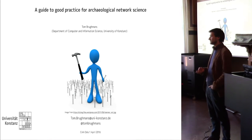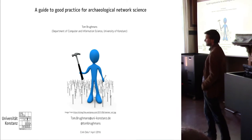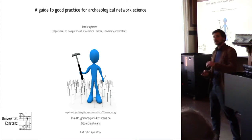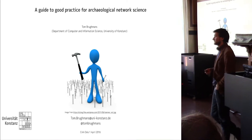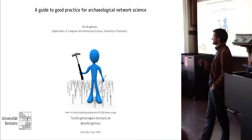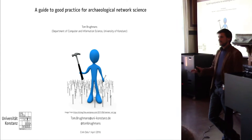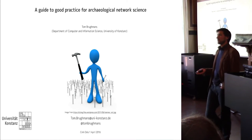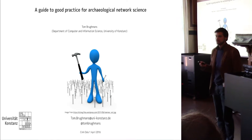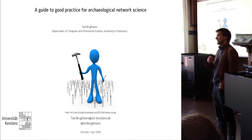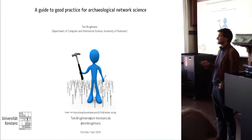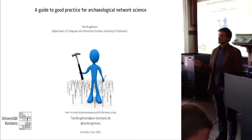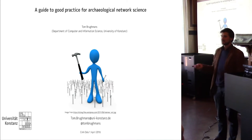We see nails everywhere when holding a hammer, so we have to avoid that. This is a common thing for new methods being adopted in an applied discipline like archaeology — it's nothing special to network science. But I think now the time is right to think critically about what network science allows us to do as archaeologists that we couldn't do before, and to formalize guidelines for critically applied network science so it actually contributes to better understanding of the past.